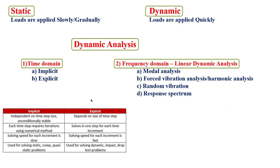For static analysis, load is applied slowly and gradually. For dynamic analysis, loads are quick — like drop tests and crash tests. In dynamic analysis there are two domains: time domain and frequency domain. In the time domain we have implicit and explicit analysis, and fast static analysis in between. In the frequency domain we have modal analysis — used to extract natural frequencies and mode shapes. For example, if your operating frequency is 60 Hz and your component also resonates at 60 Hz, you need to modify the model by adding material or increasing thickness.